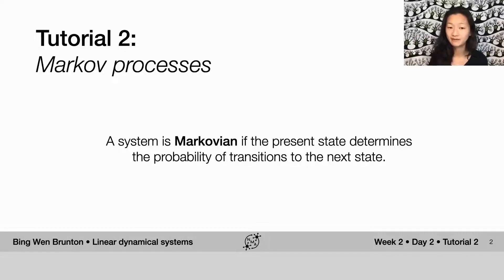The second part of this definition is that the present state determines the probability of transitions, which means that transitions to the next state are not deterministic. In fact, they have some element of chance to it. All we can do is specify the probability, but we can't specify exactly what's going to happen next.